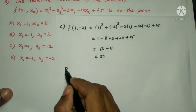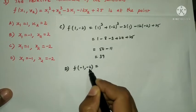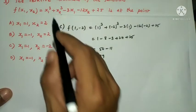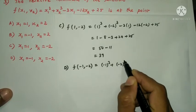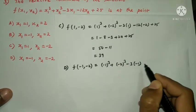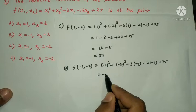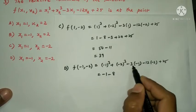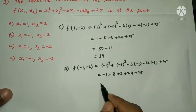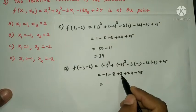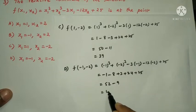Option D: f(-1,-2). x1=-1, x2=-2. (-1)³ + (-2)³ - 3(-1) - 12(-2) + 25 = -1 - 8 + 3 + 24 + 25 = 49 + 3 = 52, 52 minus 9 = 43. Option D gives value 43.